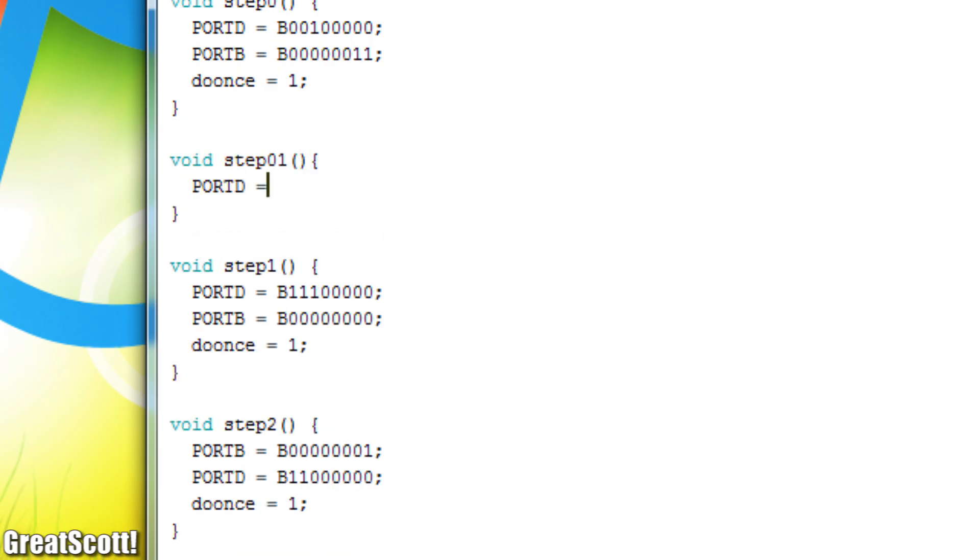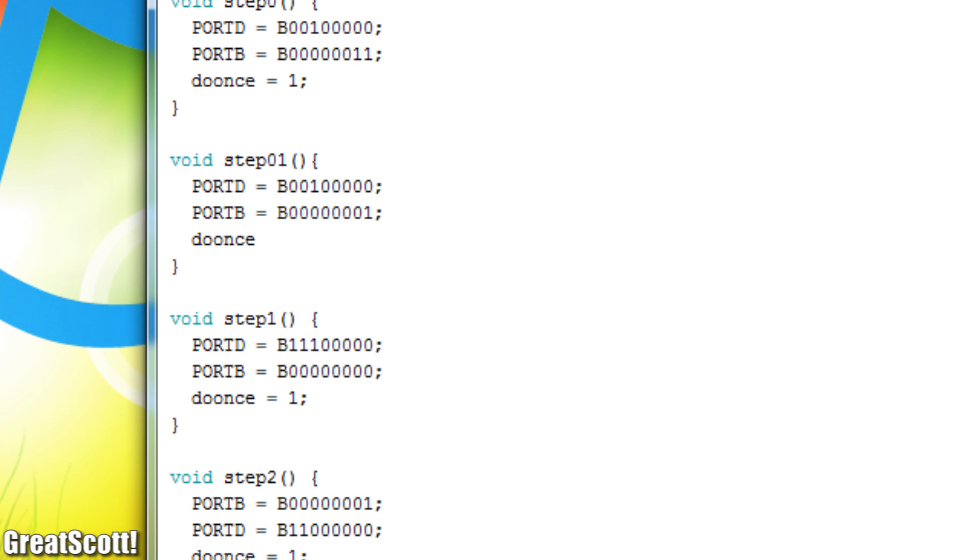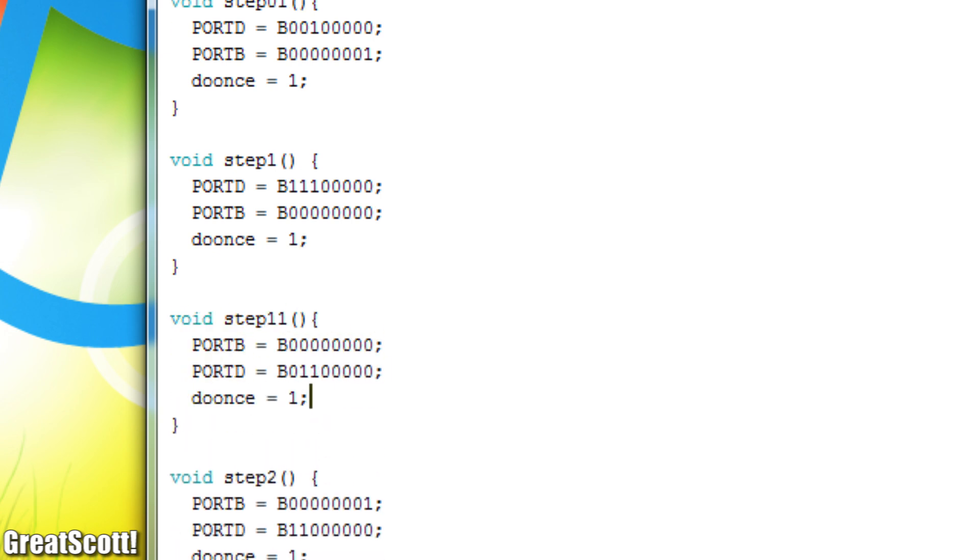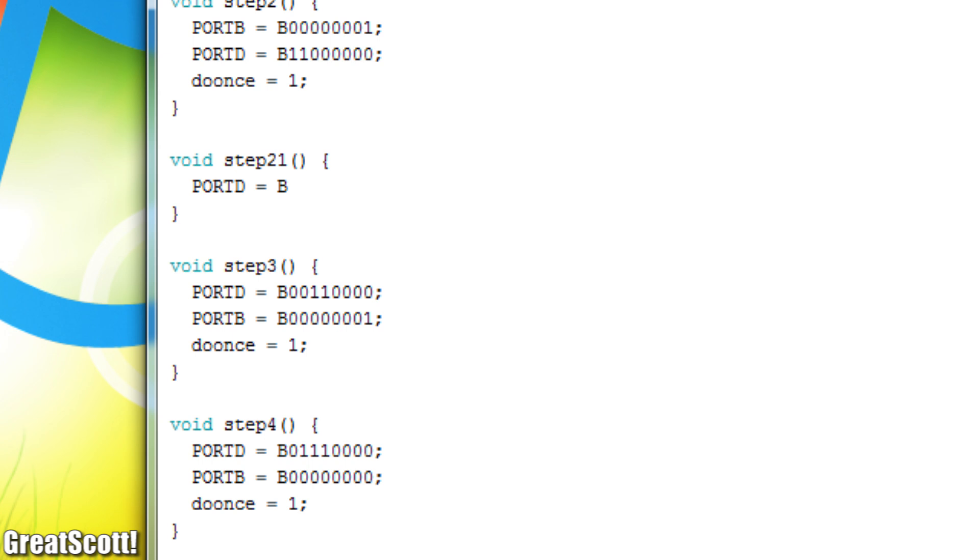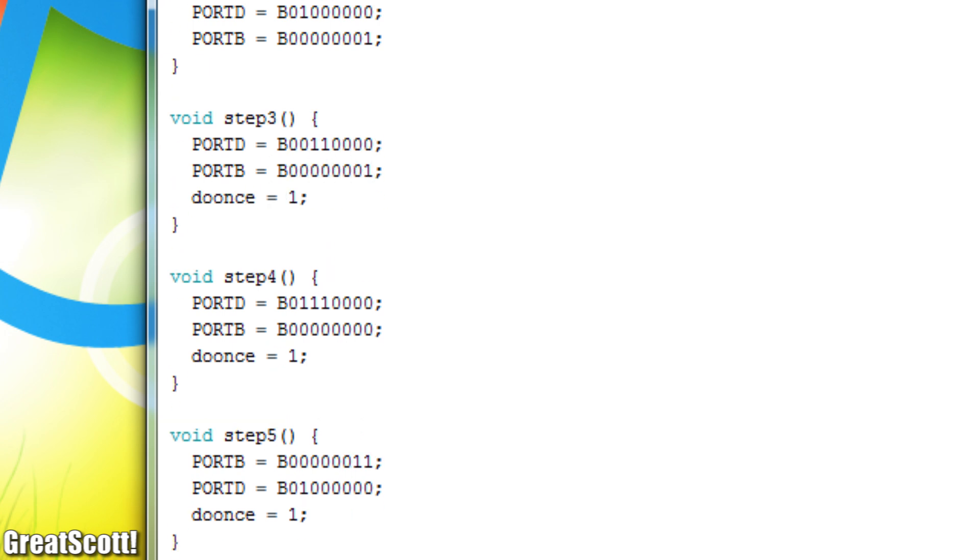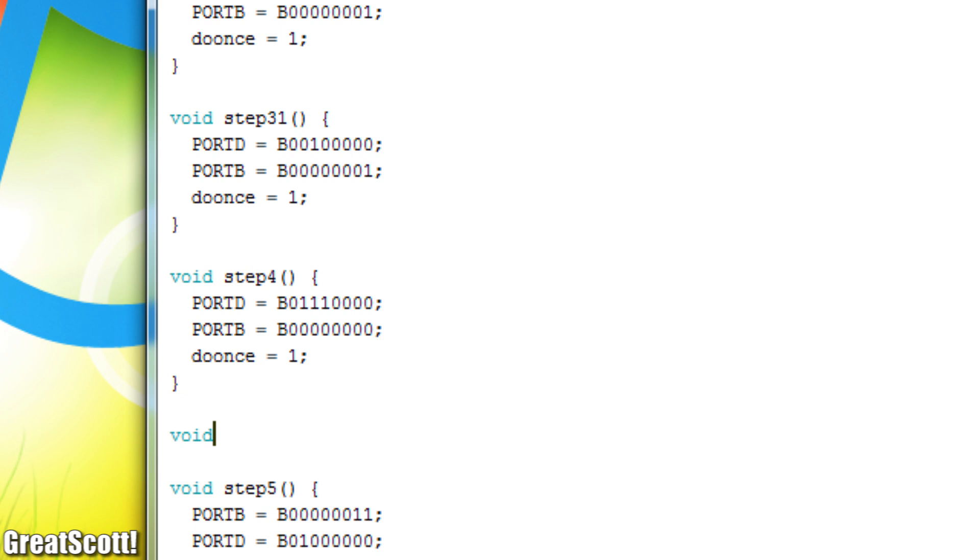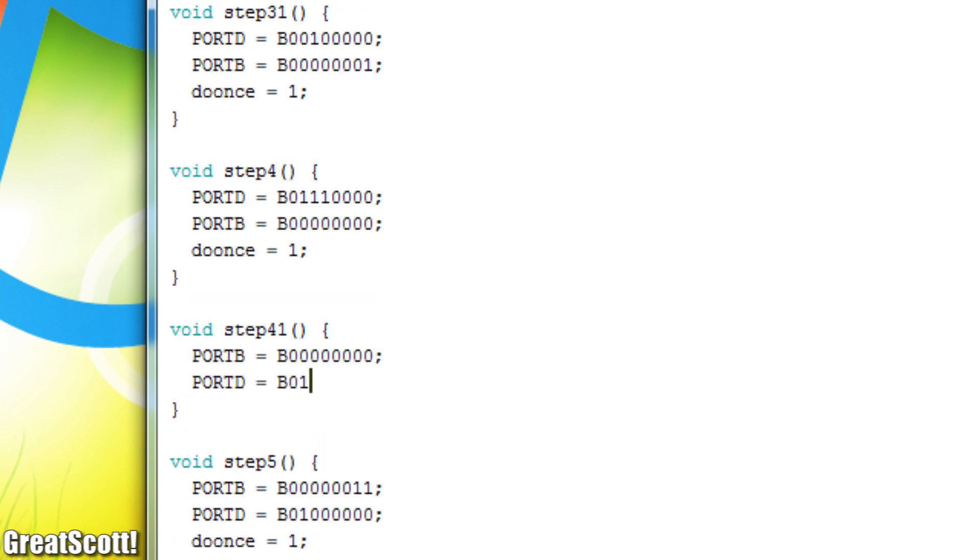To start off the integration of this current chopping technique into the Arduino code, I added six additional step functions which are pretty much identical to their counterparts, except that instead of connecting one phase to the supply voltage, they connect both phases to ground.